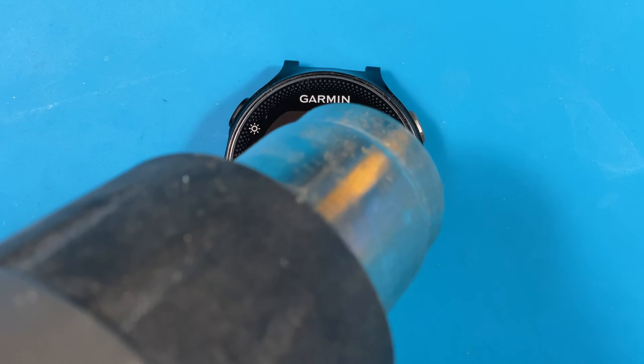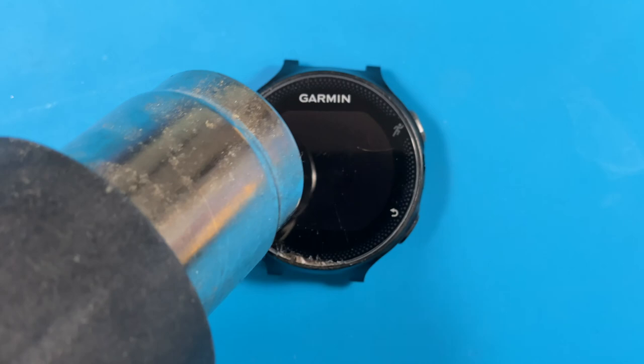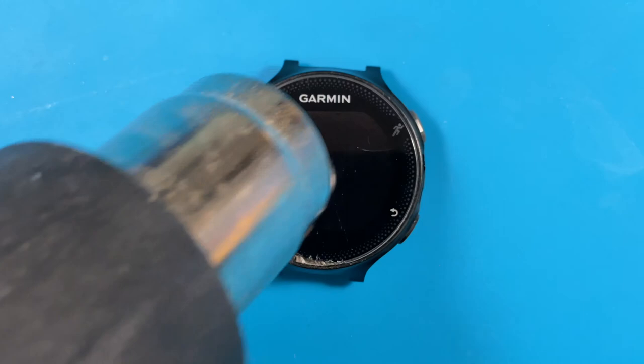We're going to start off by adding heat to the front of the glass. I use this heat gun. You can use a blow dryer—it should work just as well because the adhesive behind it is not too strong.